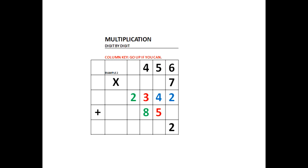Now we will add up the individual products. We start with 2. 4 plus 5 is 9. 3 plus 8 is 11 — there's the 1, and the next 1 goes in the next column to the left and up as high as it can go. And 2 plus 1 gives us 3 for our final answer: 3,192.